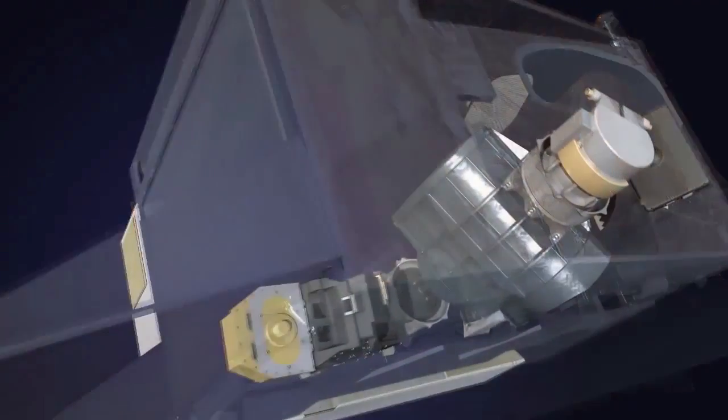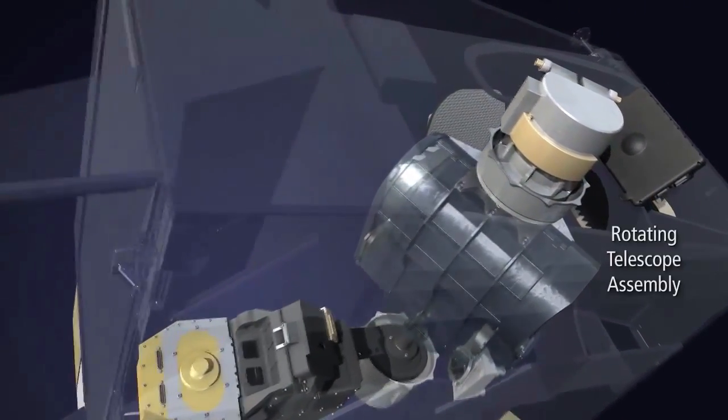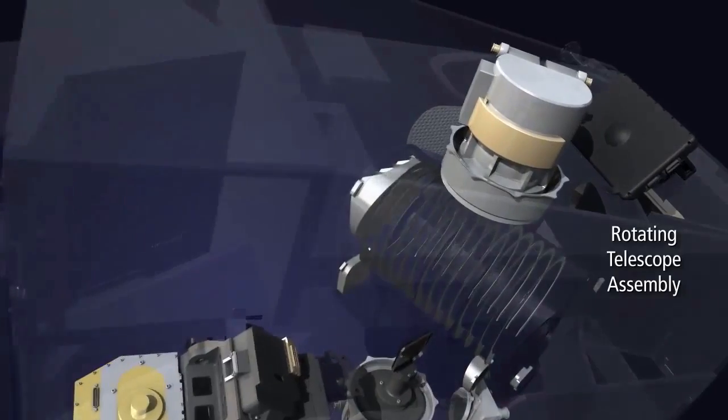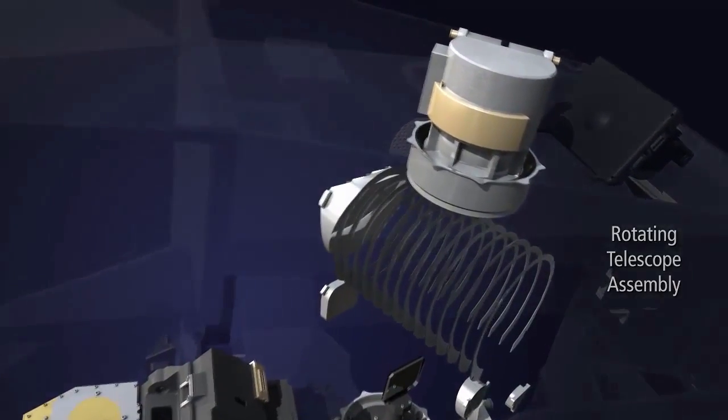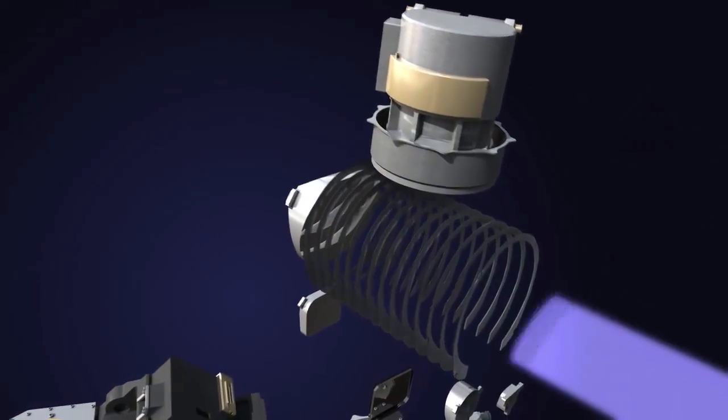In the heart of this sensor, we see the rotating telescope assembly at the center. Removing the telescope's housing, we see the baffle rings that minimize the effects of scattered light.